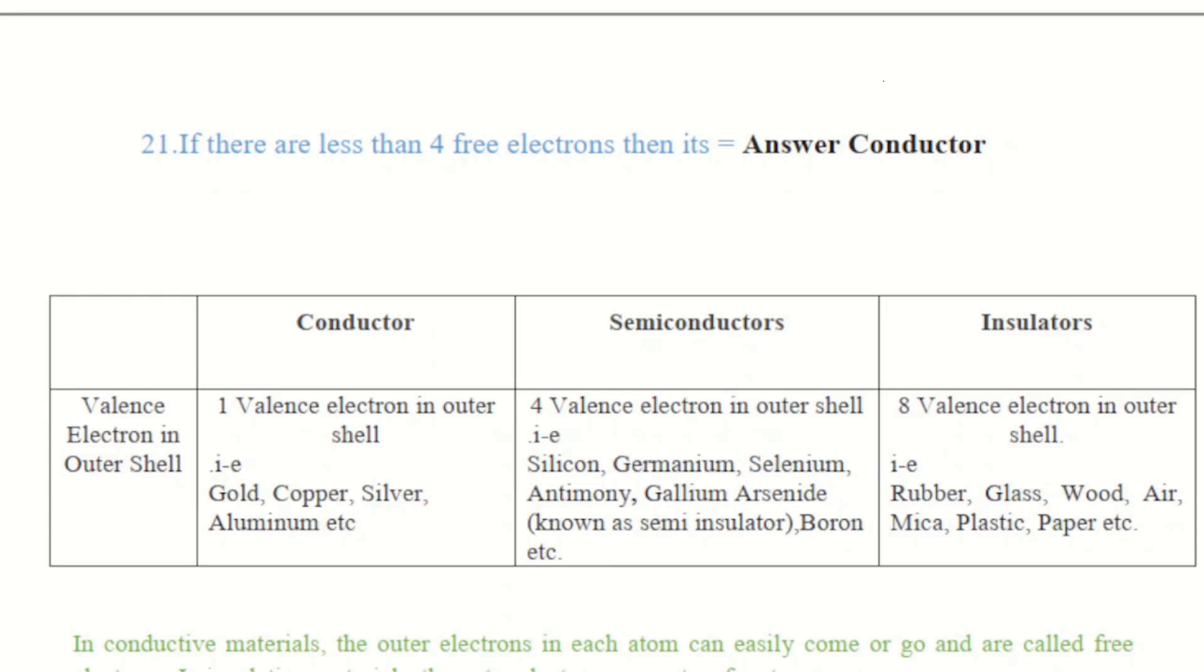You can see there are the material names: Gold, Copper, Silver, Aluminum, etc. Silicon and Germanium are coming in the semiconductor material, and insulator is coming in the rubber, glass, wood, air or the insulator. In conductor material the outer electrons in each atom can easily come or go and are called free electrons.